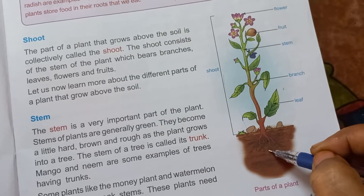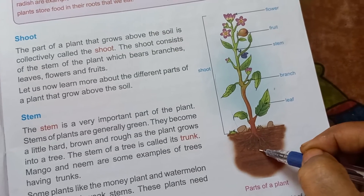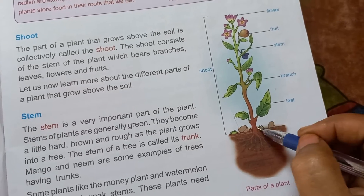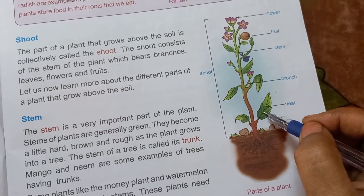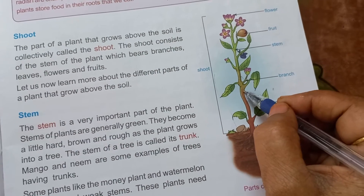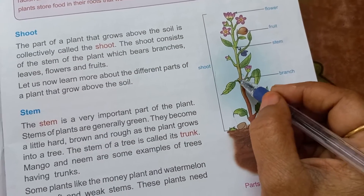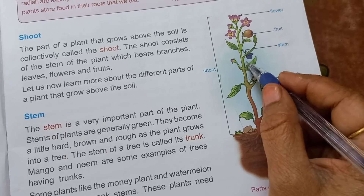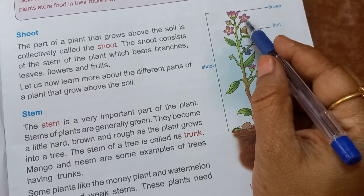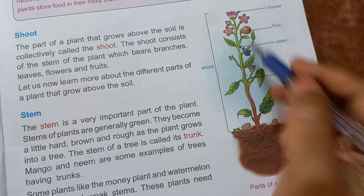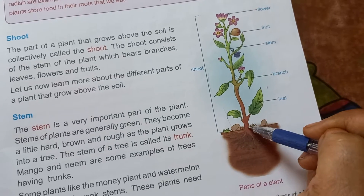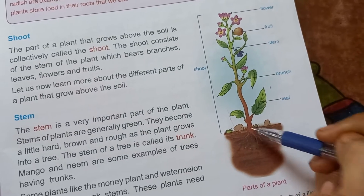Roots — it is under the soil. Then leaf — it is above the soil. Then stem, branches, then this is fruit and flower. These all are parts of a plant.